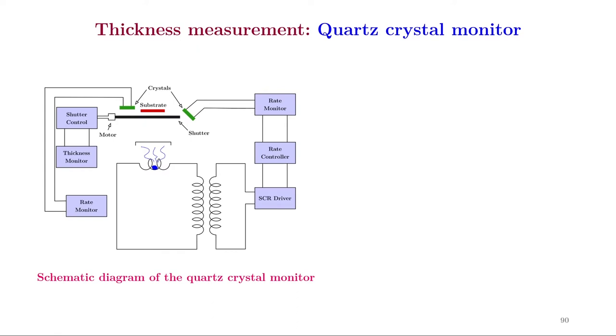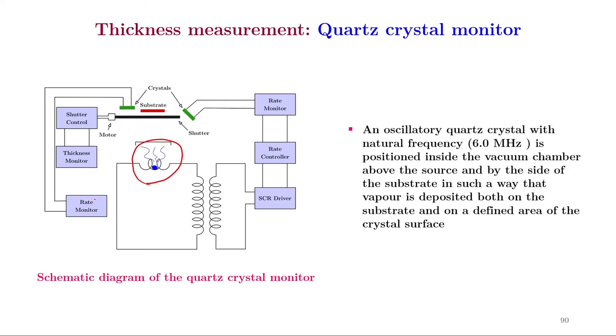This figure shows the instrumentation of a quartz crystal monitor. The material to be deposited is heated in a coil. When it is heated, vapors come out and get deposited onto the substrate that is placed directly above. What you see in green here are quartz crystals. To control the deposition, we have a shutter which could be moved using a motor. Other instruments include a shutter control, thickness monitor and a rate monitor. An oscillatory quartz crystal with natural frequency at 6 megahertz is positioned inside the vacuum chamber above the source and by the side of the substrate in such a way that vapor is deposited both on the substrate and on a defined area of the crystal surface.